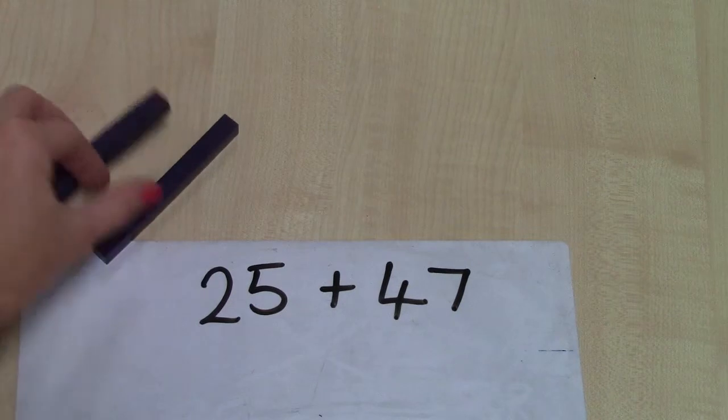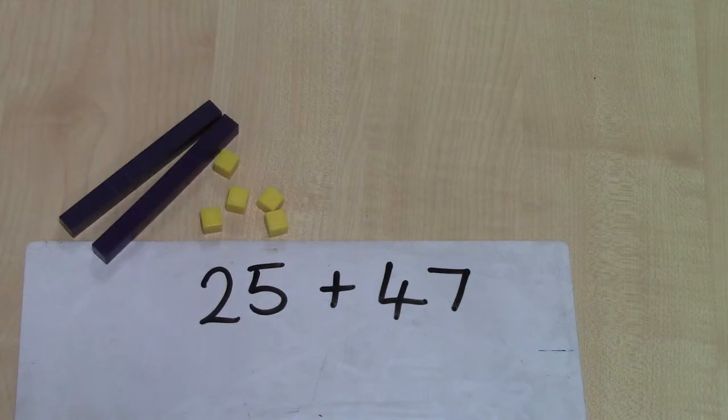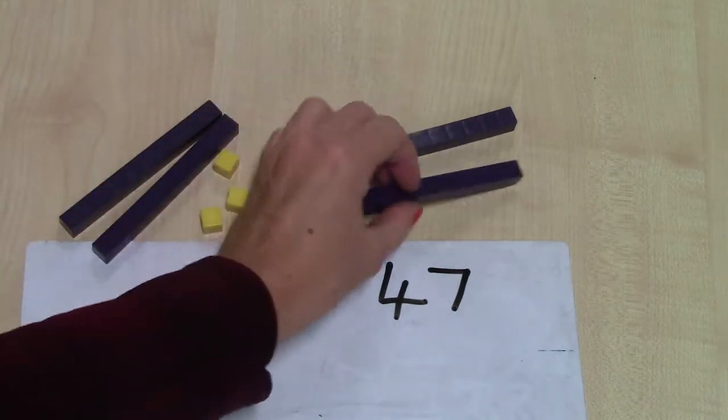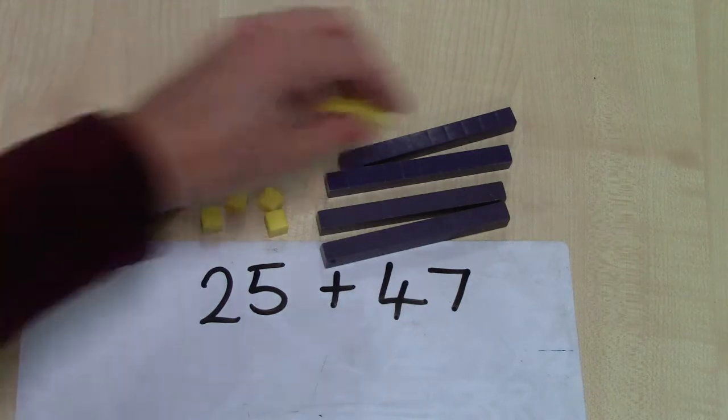So we'll make 25 again. So two tens - 10, 20 - and five units: one, two, three, four, five. I'm going to add that to 47. So four tens and seven units: one, two, three, four, five, six, seven.